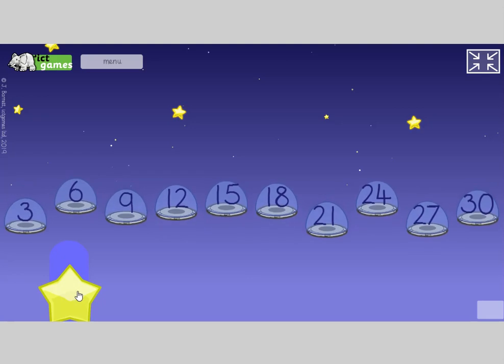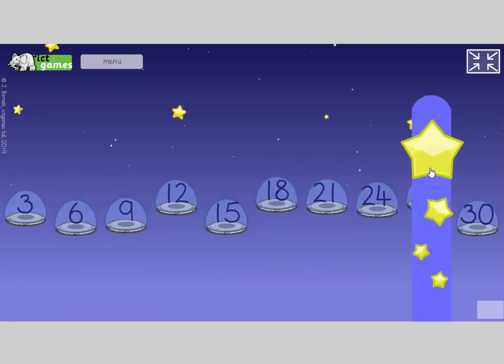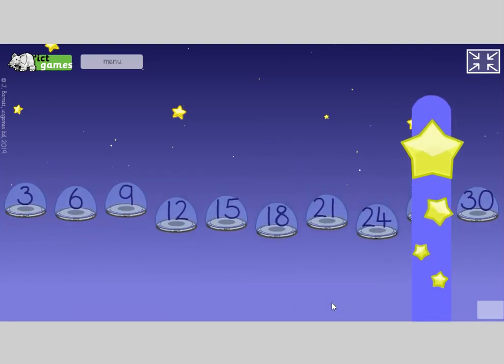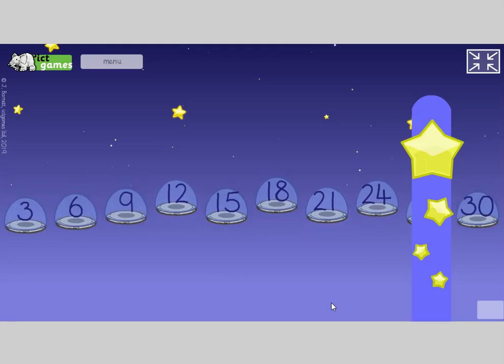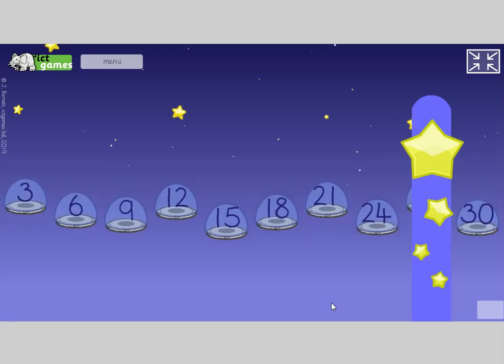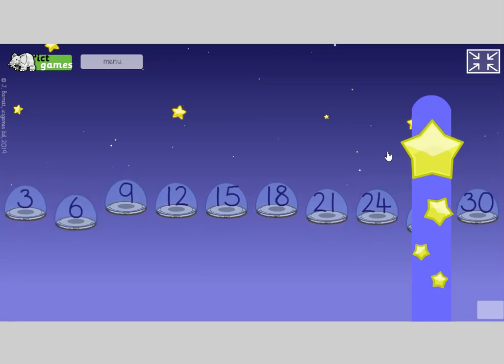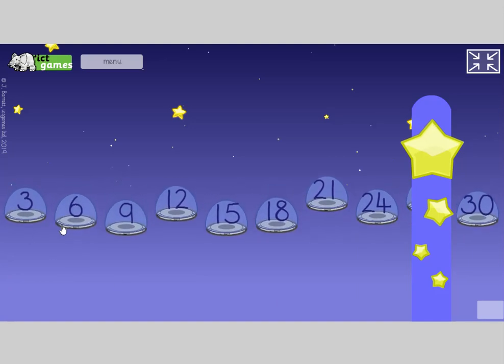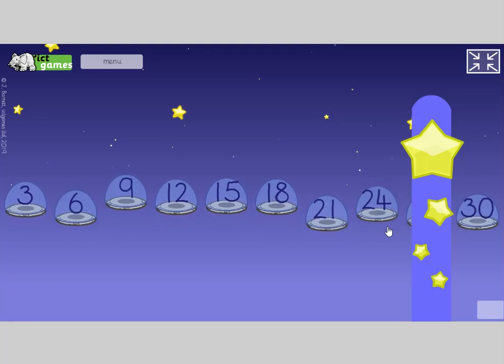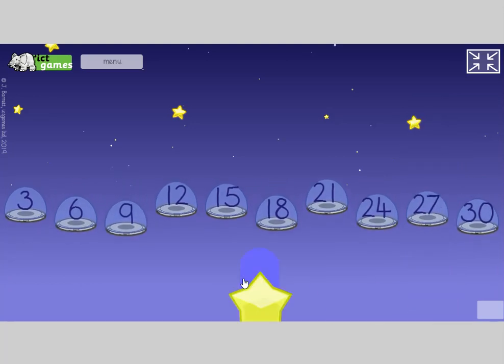Close your eyes. Heads down. No peeping. Open your eyes again. Here we go. What number's missing? Turn to your partner. Yes, actually, let's just have a little go to get there. Three, six, nine, twelve, fifteen, eighteen, twenty-one, twenty-four, twenty-seven. That's it.